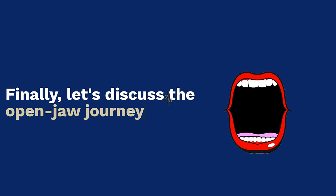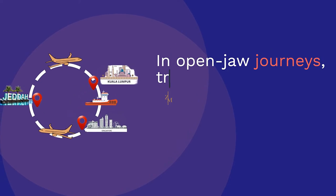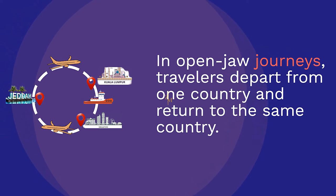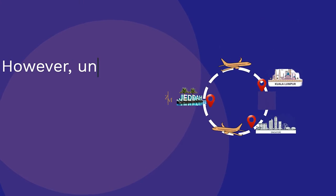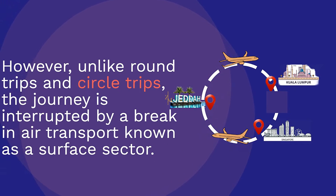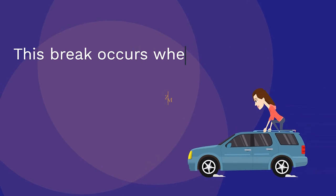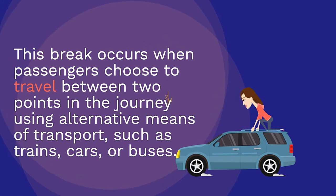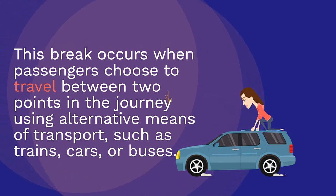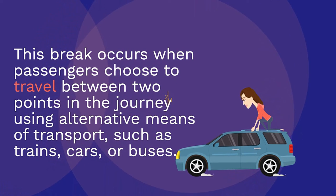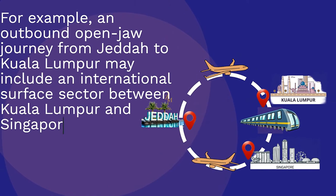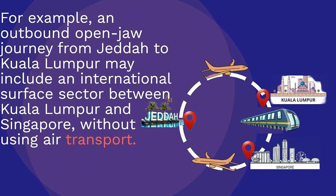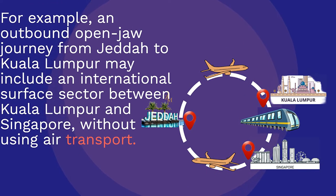Finally, let's discuss the open-jaw journey type. In open-jaw journeys, travellers depart from one country and return to the same country. However, unlike round trips and circle trips, the journey is interrupted by a break in air transport known as a surface sector. This break occurs when passengers choose to travel between two points using alternative means of transport such as trains, cars, or buses. For example, an outbound open-jaw journey from Jeddah to Kuala Lumpur may include an international surface sector between Kuala Lumpur and Singapore without using air transport.